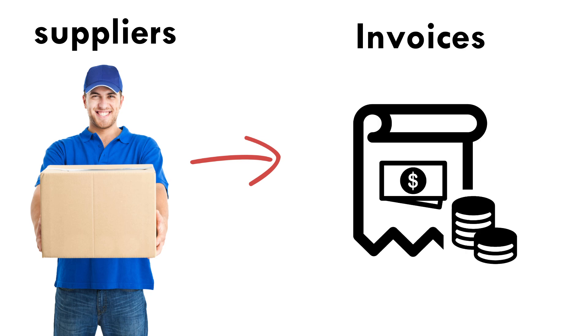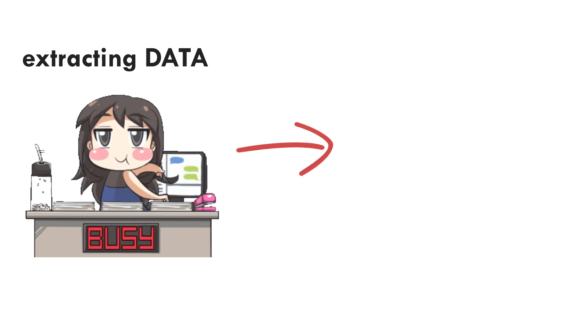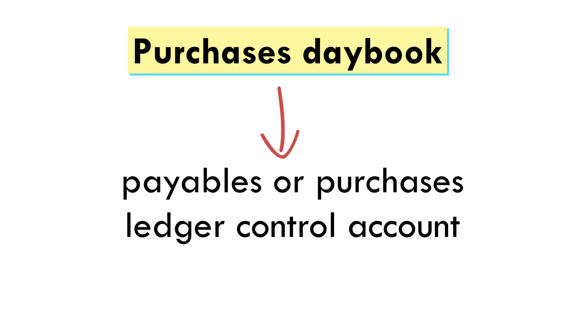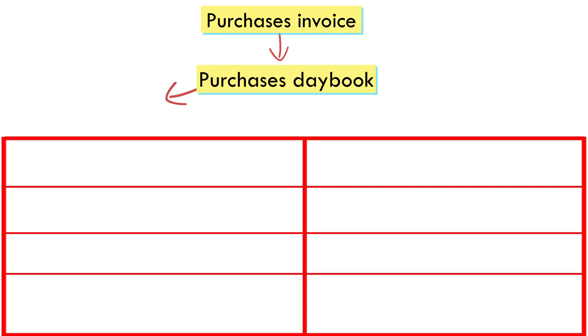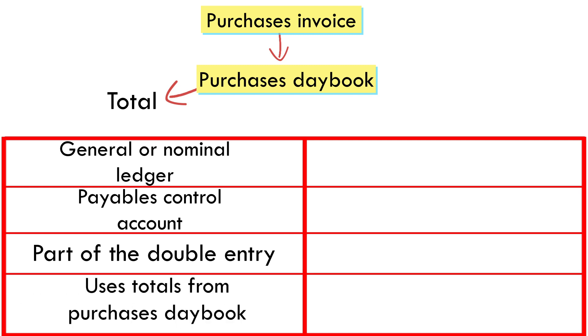Moving on to the Payables Control Account: when we buy goods from our suppliers on credit, they'll issue us with invoices to request for payment. The data from these invoices will be extracted and recorded in the book of Prime Entry called the Purchases Day Book. The figures will be summed up and posted in the general or nominal ledger called Payables or Purchase Ledger Control Account. The individual balances from the Purchases Day Book will be posted in the personal ledger. The general ledger is called Payables Control Account, is part of the double entry, and uses totals from the Purchases Day Book.